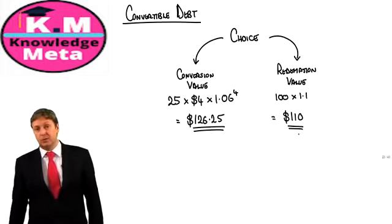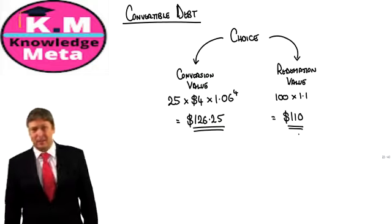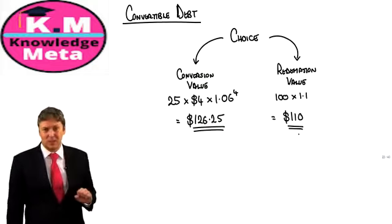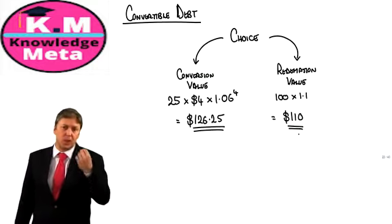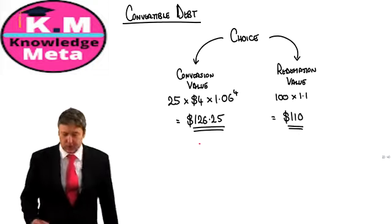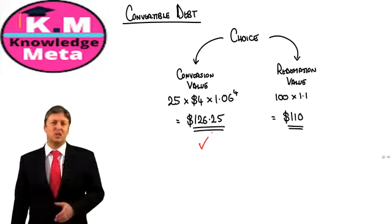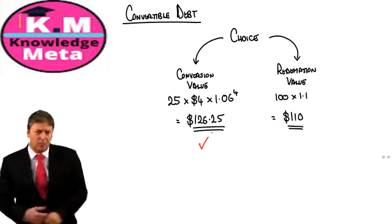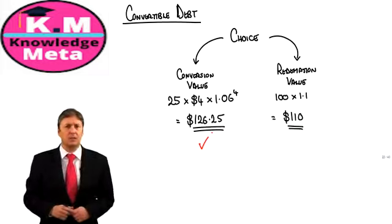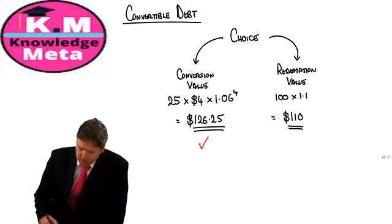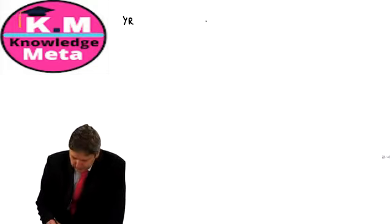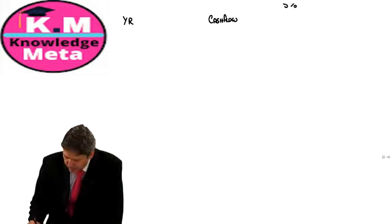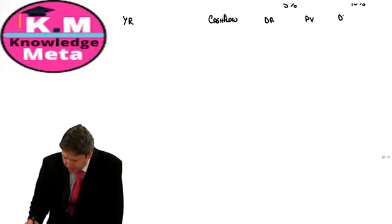Once we've made that choice, we pick up that number — $126.25 — and throw it into the seven columns. We have our years, cash flows, 5% discount factors, and 10% discount factors with their respective present values. Year zero: market value −$95. Years 1–4: interest of 7. Year 4: conversion value of 126.25.